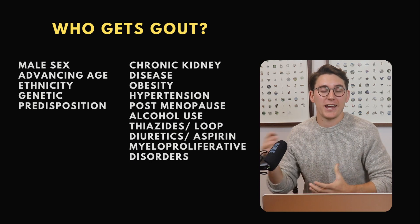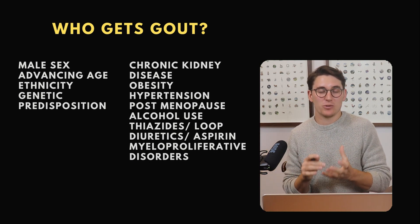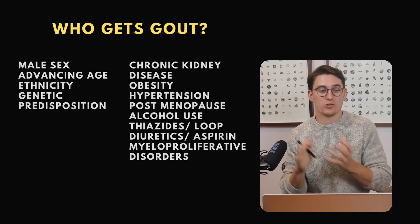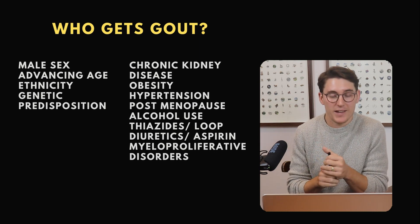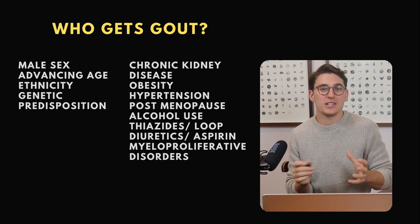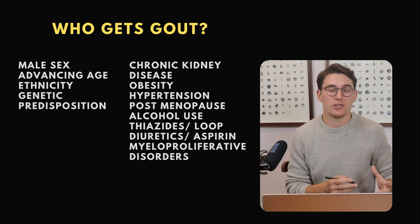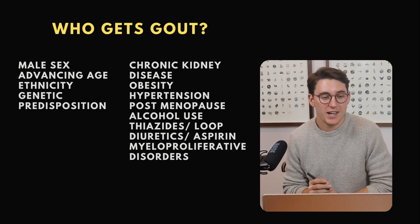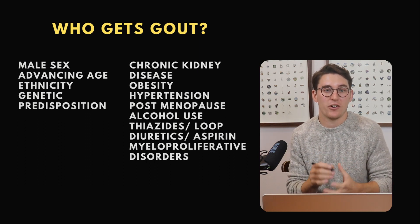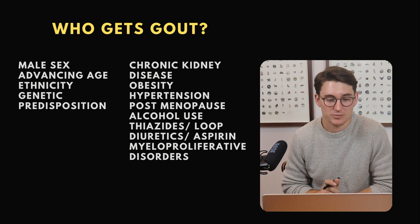As someone ages, their risk of gout goes up, and certain ethnicities have higher levels of gout, like Pacific Islanders or certain groups of Caucasian men. There are many genetic predisposing factors, mostly to do with the production or excretion of urate, and there are over 200 genetic loci or SNPs identified that predispose someone to developing gout.